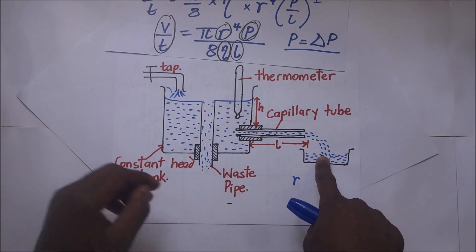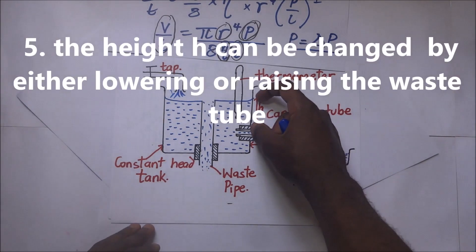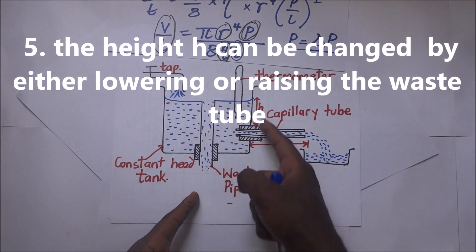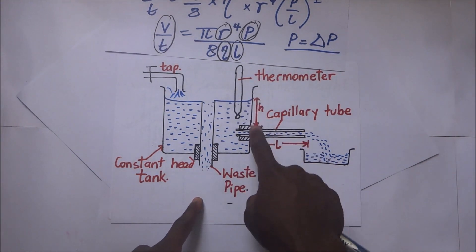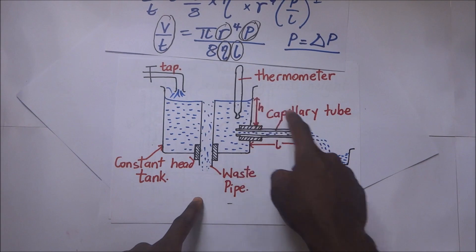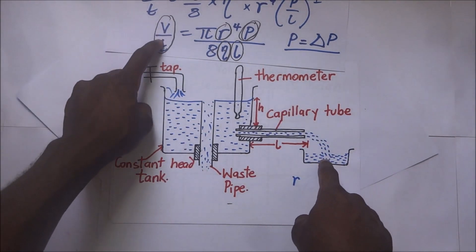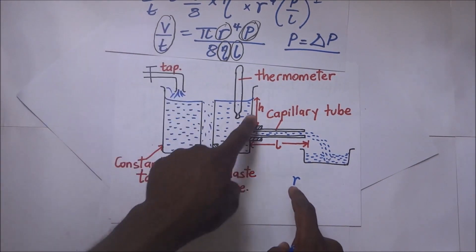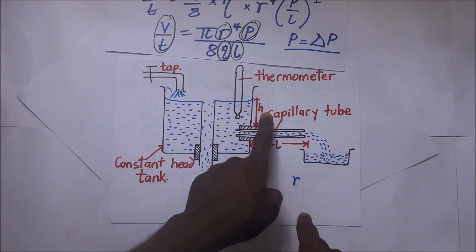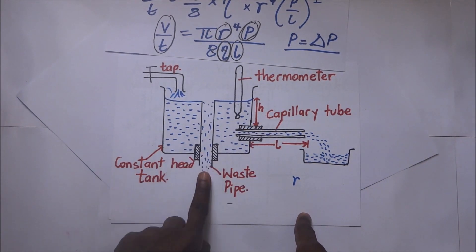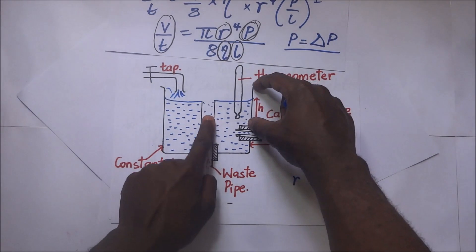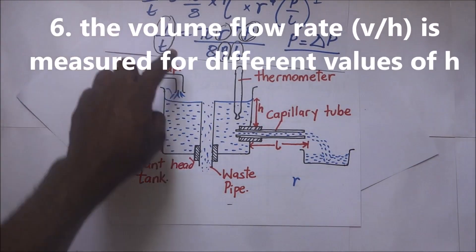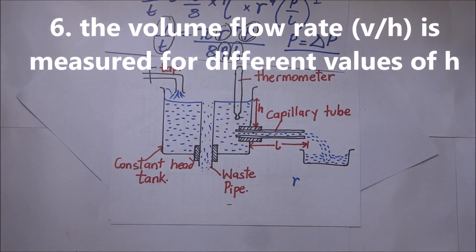When measuring the volume flow rate, you do it at a certain height H. Then you adjust the waste pipe to obtain a new value of H and get another volume flow rate V/T. What we are doing is measuring the volume flow rate for different values of H by adjusting the waste pipe — pushing it up to increase H or down to reduce H.